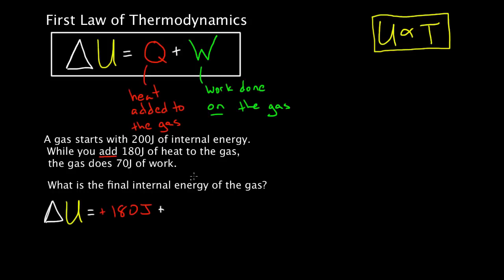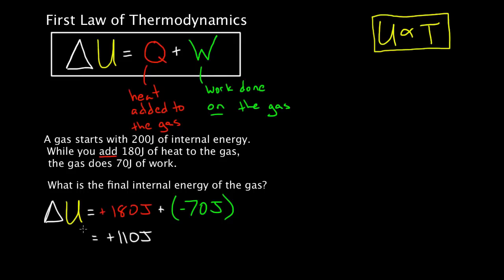Plus the amount of work done on the gas. The gas does 70 joules of work — most people would just put 70 joules, but that's wrong. This W with the plus sign represents how much work was done on the gas. If the gas does 70 joules of work, then negative 70 joules of work were done on the gas — you have to be really careful about that. So the change in internal energy equals positive 180 plus negative 70, which gives positive 110 joules. Internal energy went up by 110 joules, which means the temperature also goes up.